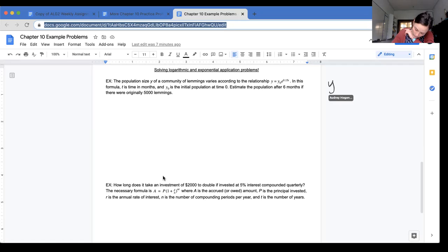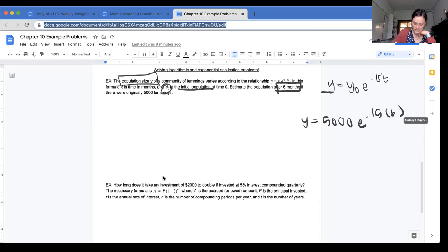So my equation, y equals y sub 0 e to the 0.15t, I need to plug some stuff in. I know that y is the population size, and that's what I'm solving for. y sub 0 is the initial population, which is 5,000. So I'm going to have y equals 5,000 e to the 0.15 times t, and we wanted after six months, so I'm going to plug in 6. So that is equal to y equals 5,000 e to the 0.9.